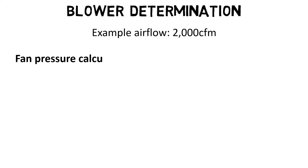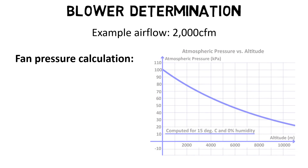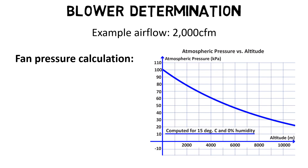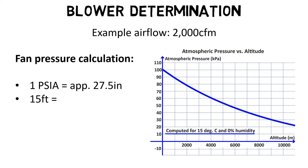Step two: calculate the required fan pressure depending on the water depth, PSIA of the WWTP basin, and atmospheric pressures. One PSIA equals approximately 27.5 inches of water depth. As an example, taking a water depth of 15 feet and an altitude of 0 feet gives a PSIA of 6.5.